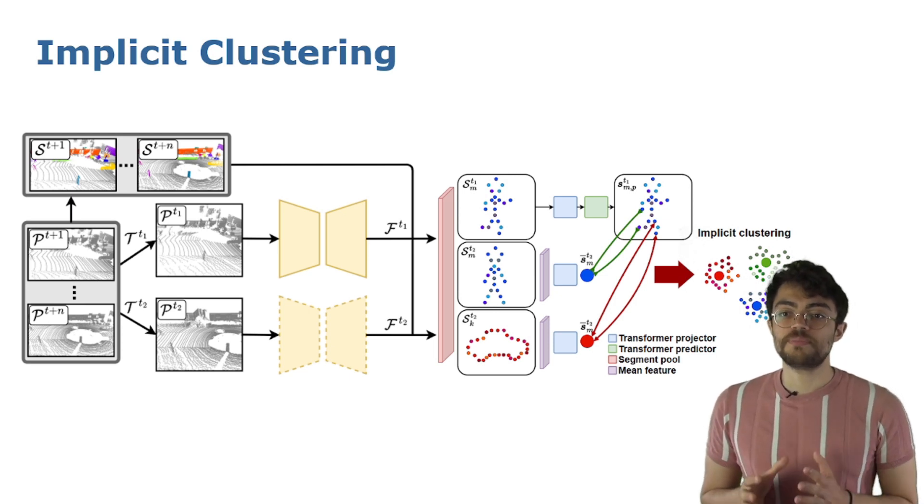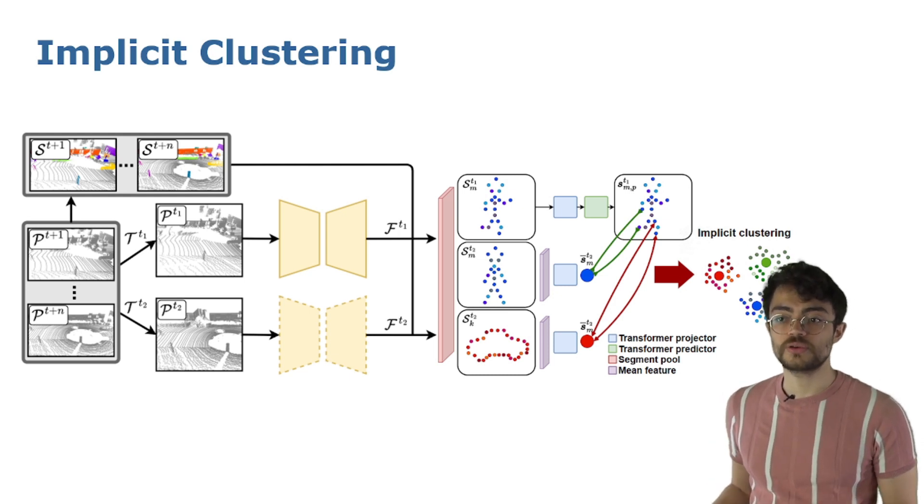While for the other view, we apply average pooling to extract a target mean representation for that object and use a one-layer transformer encoder as a projector.